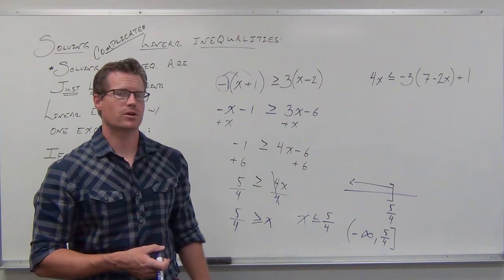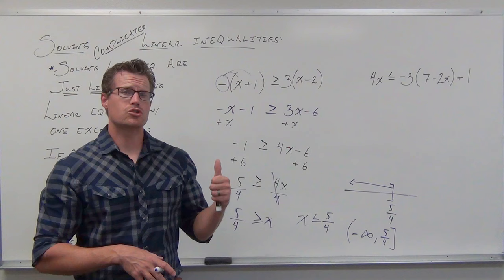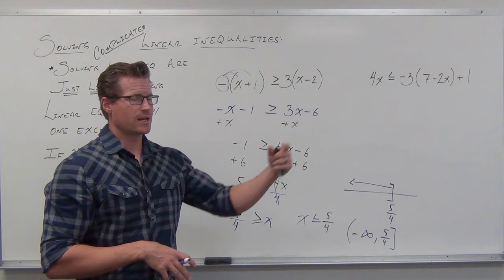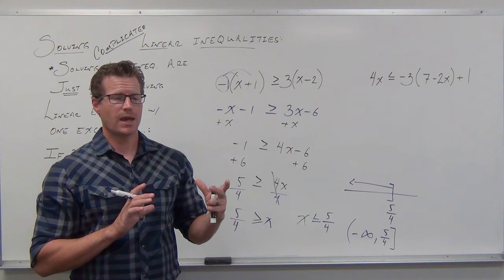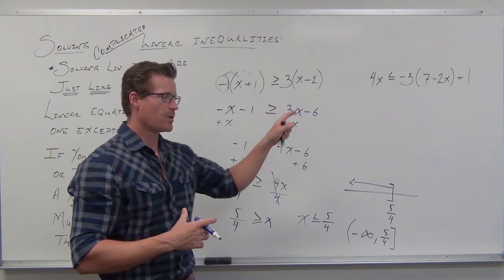I would really encourage you to try that problem on your own. See if you can distribute, get rid of the smaller variable. If you don't want to get rid of the smaller variable and keep your variable on the left-hand side, think about that. At the very end, what I want is for you to switch the inequality — reverse it only when appropriate — and end with your variable on the left-hand side. That makes it easier to graph.